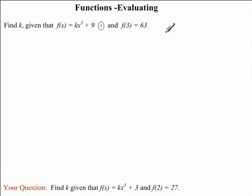So we are asked to find k given that f(x) is equal to kx³ + 9, which is equation 1, and f(3) equals 63. This second piece of information tells us that the value of the function is 63 when our x is equal to 3.